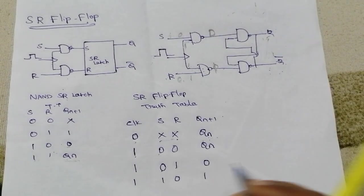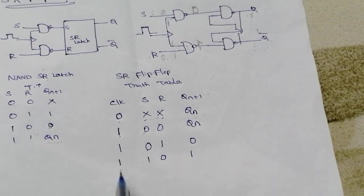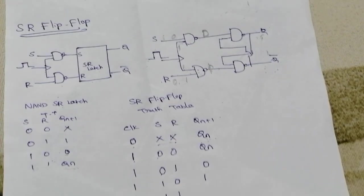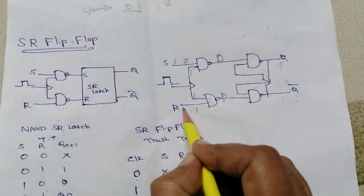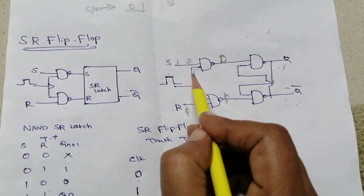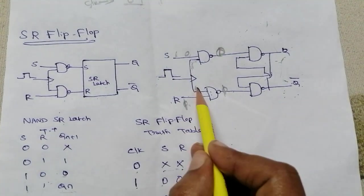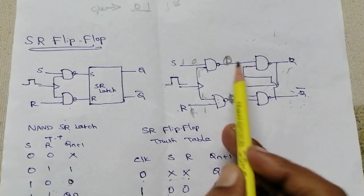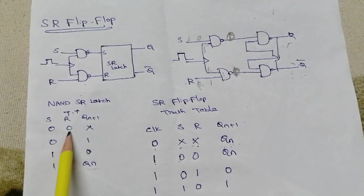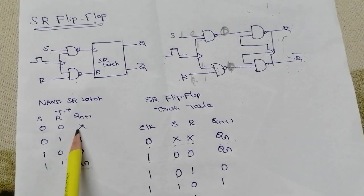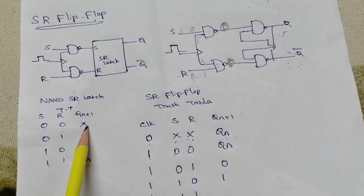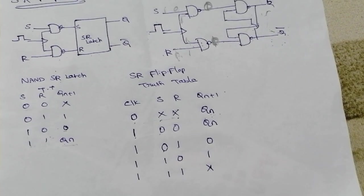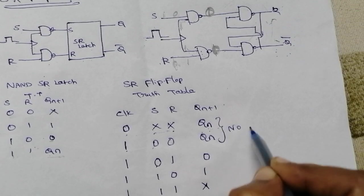The last possibility is clock=1 and S=1, R=1. A 1-1 combination at both gates gives output 0-0. So the NAND SR latch receives inputs 0 and 0. A 0-0 combination in the NAND SR latch gives the forbidden or invalid state. Therefore, the next state is invalid.